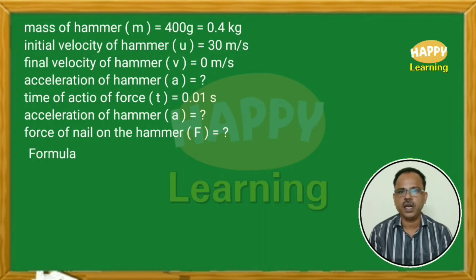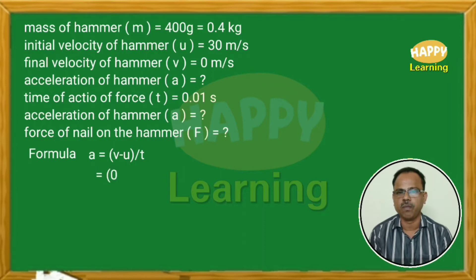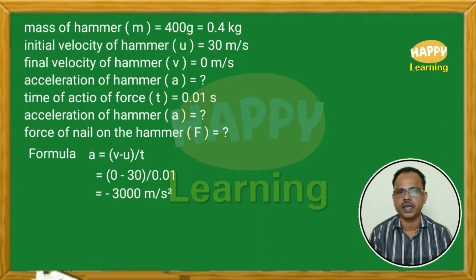Formula: A is equal to V minus U divided by T. Acceleration equals rate of change of velocity. That is equal to 0 minus 30 divided by 0.01, which equals minus 3000 meters per second square.